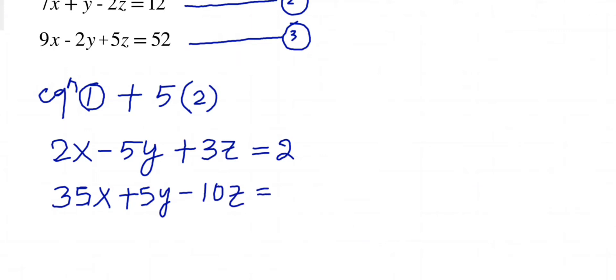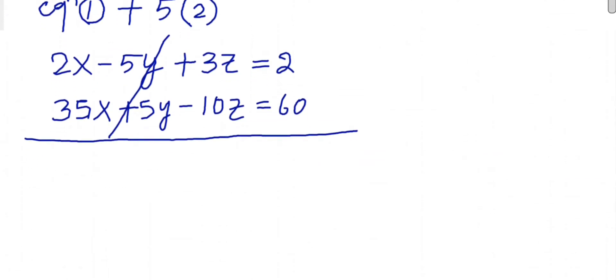equals to 12 times 5 is 60. Now I'll add this and the middle term will cancel. Now what will remain? 37x then this becomes minus 7z is equals to 62.